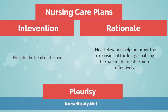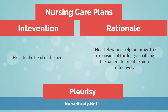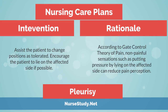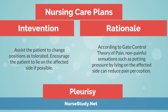Intervention: Elevate the head of the bed. Rationale: Head elevation helps improve the expansion of the lungs, enabling the patient to breathe more effectively. Intervention: Assist the patient to change positions as tolerated. Encourage the patient to lie on the affected side if possible. Rationale: According to gate control theory of pain, non-painful sensations such as putting pressure by lying on the affected side can reduce pain perception.